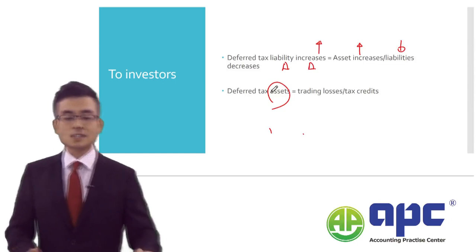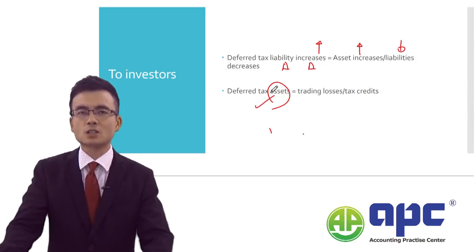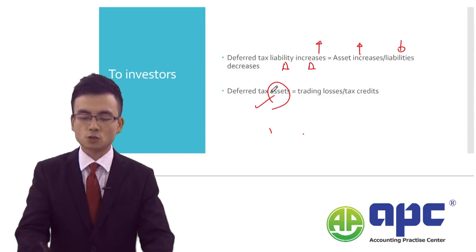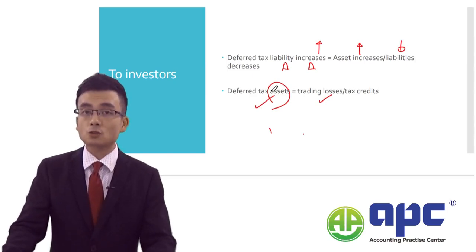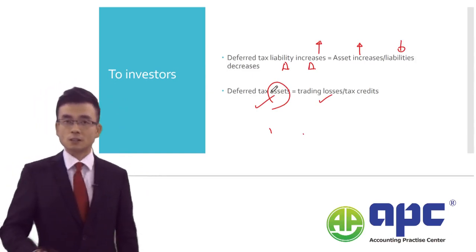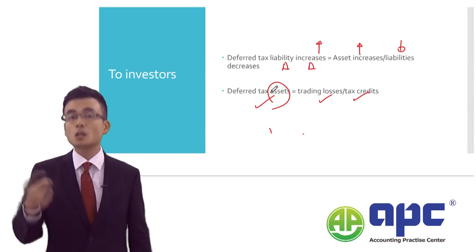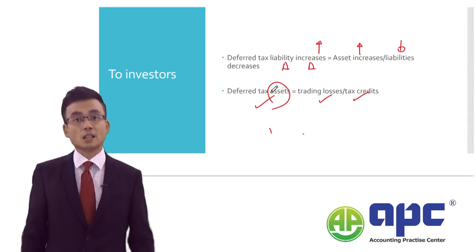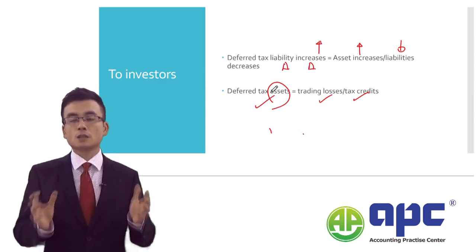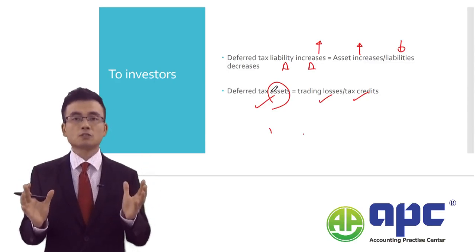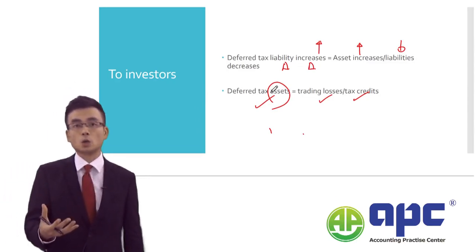If you see deferred tax assets recognized by the entity, it may suggest the business is not doing particularly well — particularly that the business has previous trading losses, meaning expenses are greater than the revenue recognized. Or it may suggest the business operates in a foreign country or a very special area, enjoying tax credits — tax savings schemes provided by the government. If this is the case, the business would recognize a deferred tax asset. In my course, I will explain the maximum amount of deferred tax asset value to be recognized in the accounts — there will be strict rules for that.